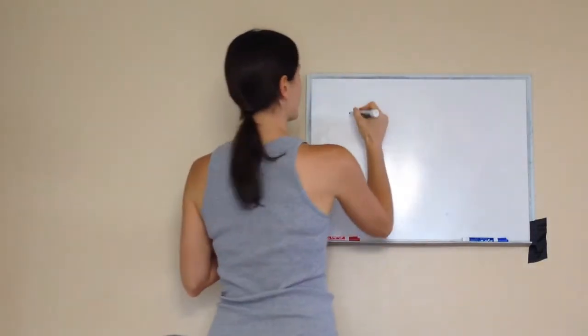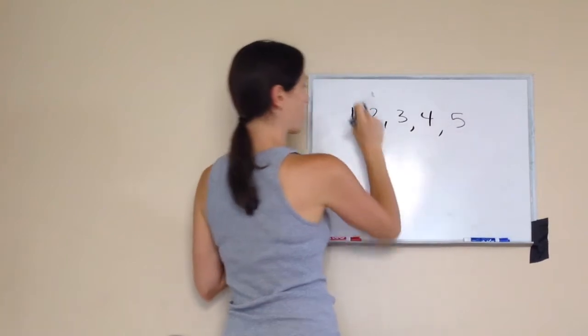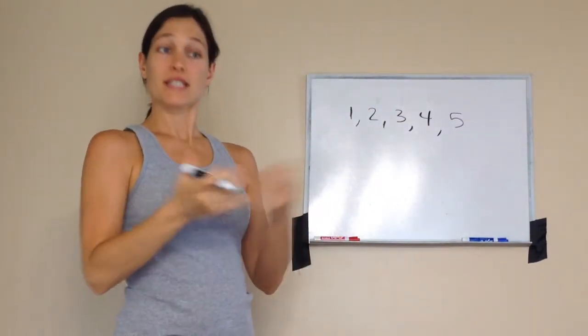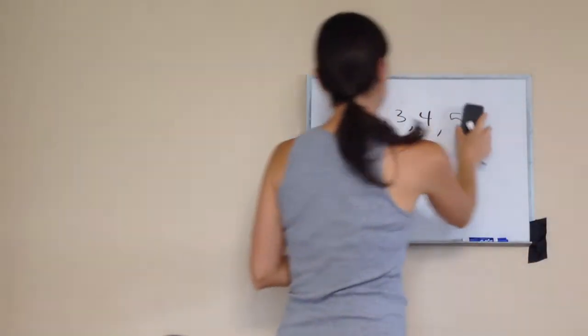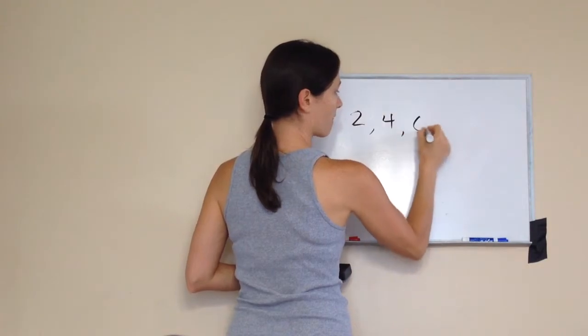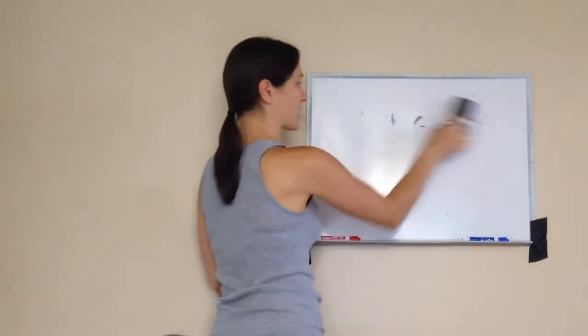So for example, this is a sequence. What's happening each time I go to the next number? Adding up, excellent! You're exactly right. All right, let's try this one. What's happening? By two, going up by twos, excellent, you're exactly right.